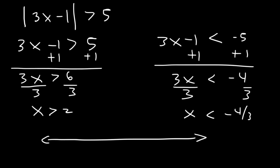Now because we're dealing with inequalities we need to plot the solution on a number line. So we need 2, negative 4 thirds is about negative 1.3 which is between negative 1 and 2. So x is greater than 2, which means that we have an open circle at 2 shaded towards the right. And x is less than negative 4 thirds which is about negative 1.3. So it's an open circle shaded towards the left.